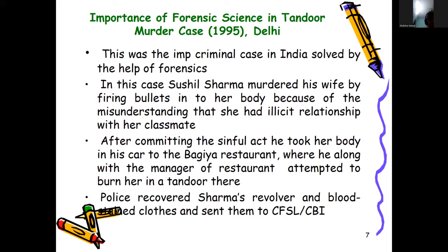In this case, Sushil Sharma murdered his wife by firing bullets in her body due to misunderstanding that she had an illicit relationship with her classmate. After committing the act, he took her body in his car to the Bagia restaurant where he, along with the manager of the restaurant, attempted to burn her in a tandoor. Police recovered Sharma's revolver and blood-stained clothes and sent them to the CFSL CBI.